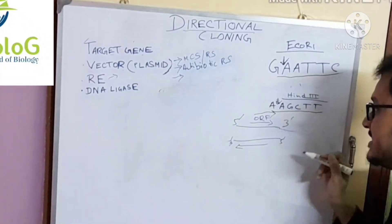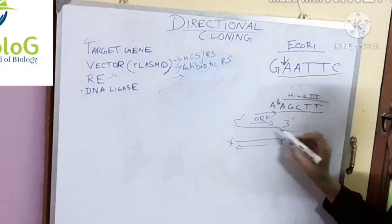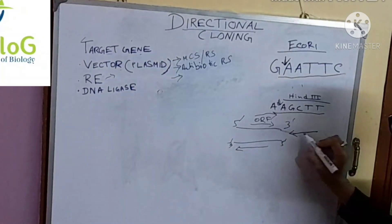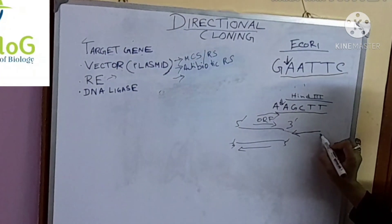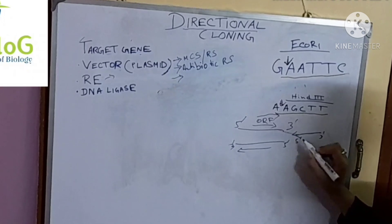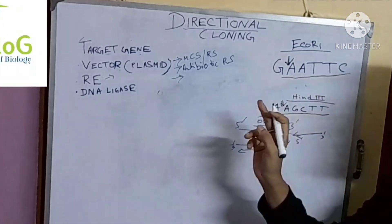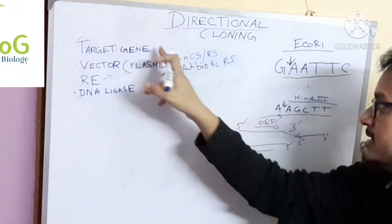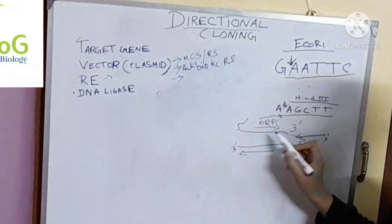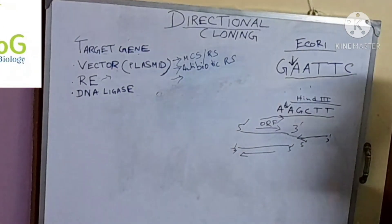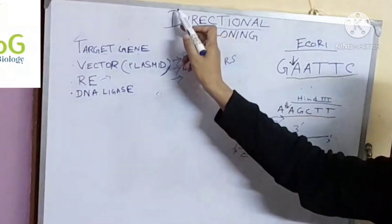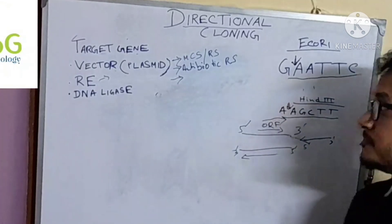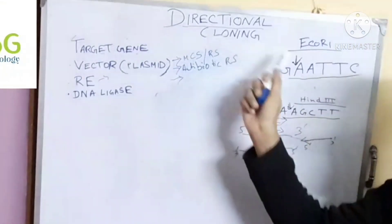If the target gene is inserted in the 3' to 5' direction then the purpose will not be solved. So we need to insert the target gene towards the 5' to 3' direction, and that's why this cloning process is called directional cloning.